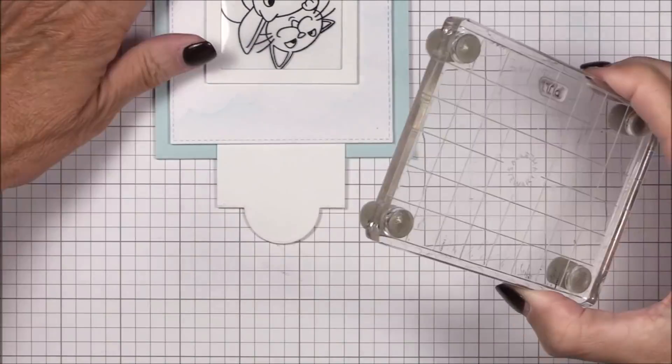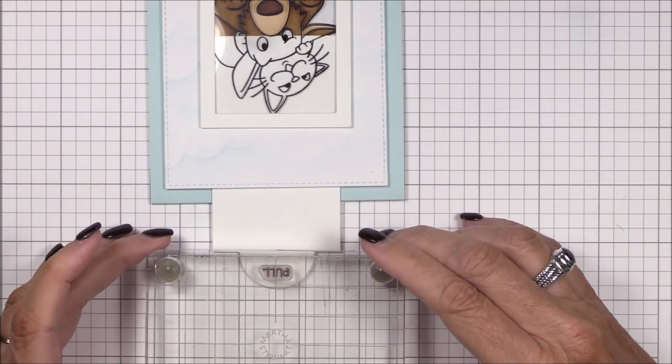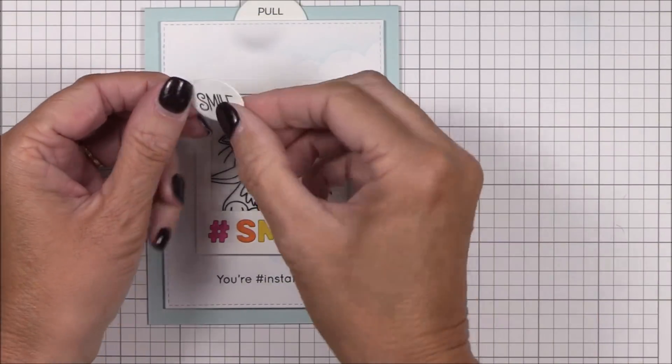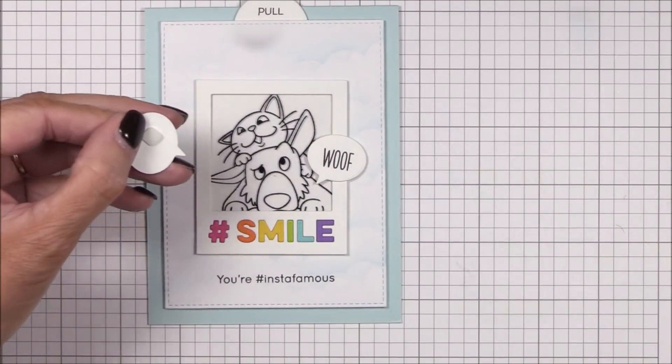I've stamped the word pull from the interactive label stamp set onto the end of the tab using black licorice hybrid ink. And then, as a fun finishing touch, I thought I'd add some word bubbles to the front of the card.